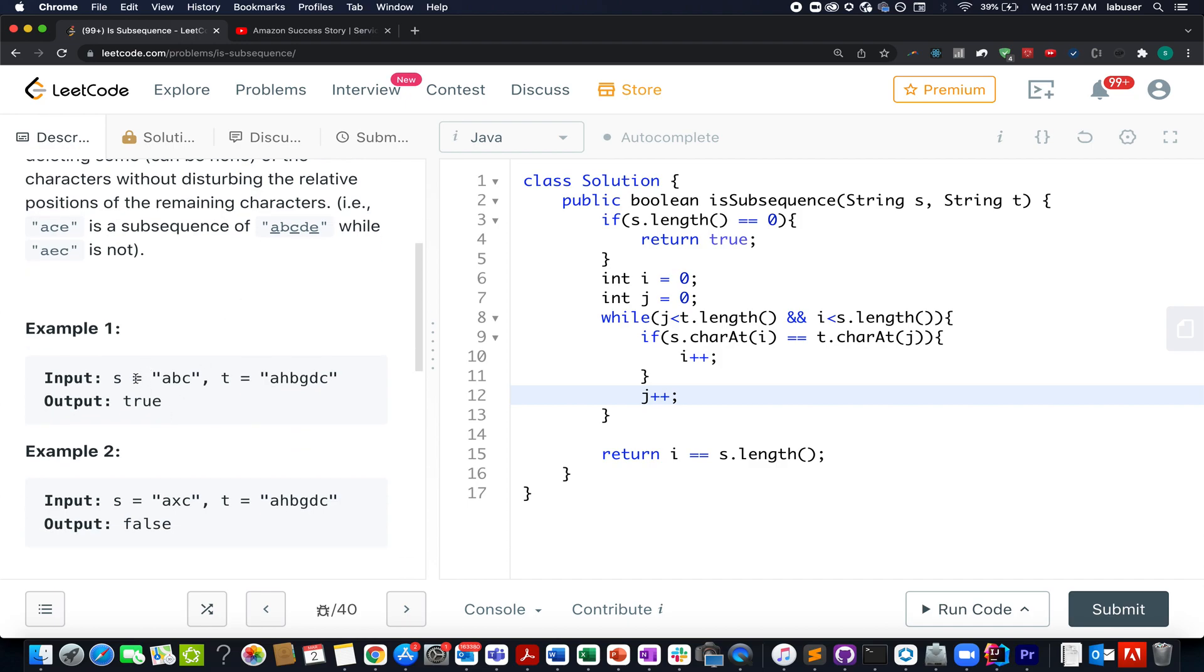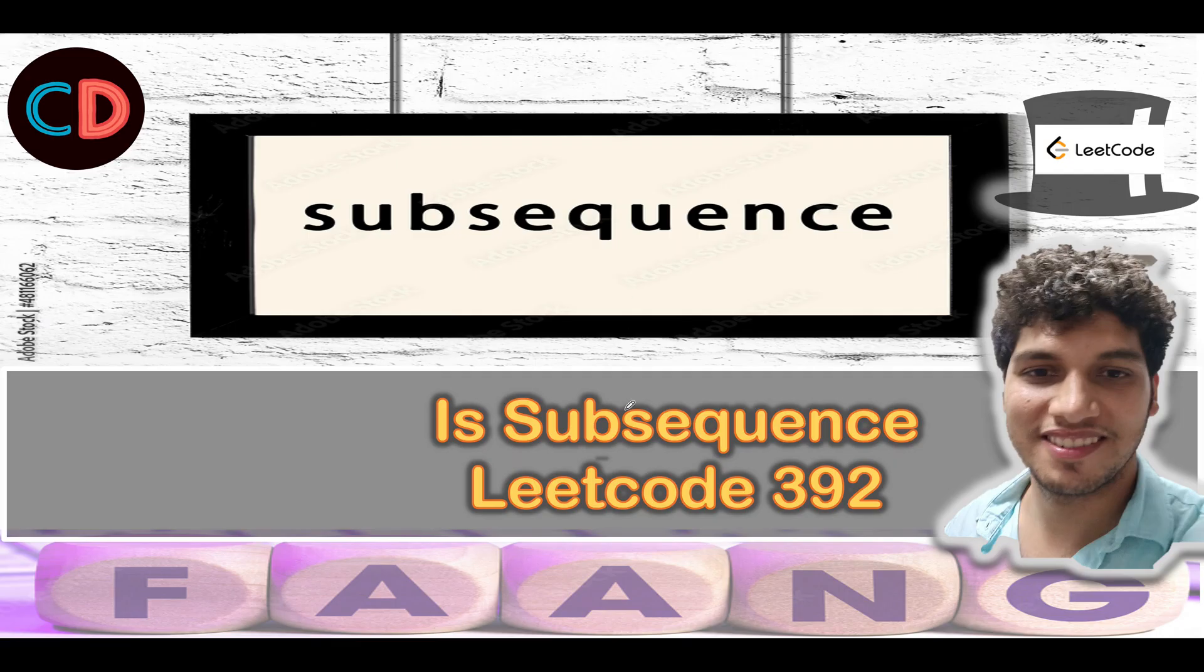For example, they have provided us with a few cases where s is "abc" and t is "ahbgdc". As you can see, a, b, and c all three characters occur in the same order in t as present in s. As a result, we have to return true—it's a subsequence. Here we have s as "axc", and since x is not present in t, we have to return false.